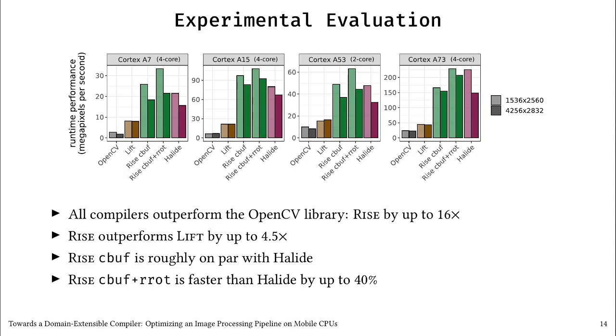What I want to highlight from these results is that all compilers outperform the OpenCV library. And RISE, in particular, is up to 16 times faster than OpenCV. This clearly shows the performance benefits of whole program optimizing compilers. RISE outperforms LIFT by up to 4.5 times. This is because previous LIFT work lacks crucial optimizations, such as circular buffering.